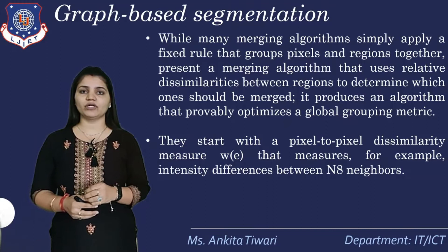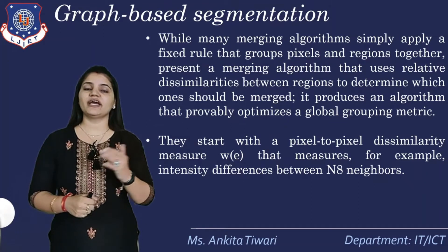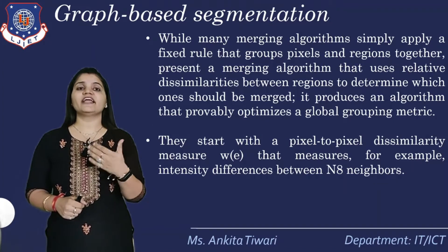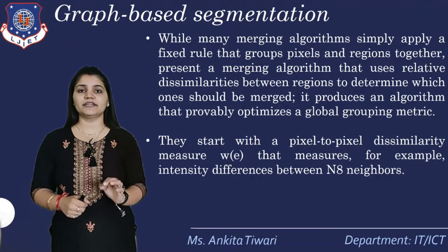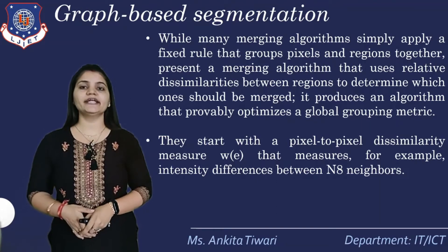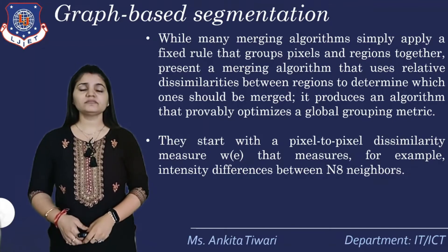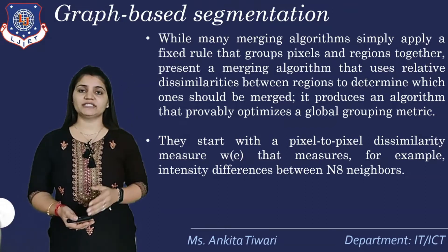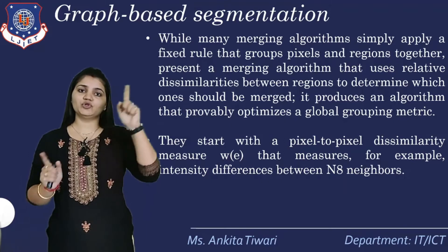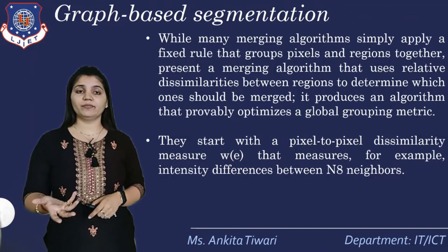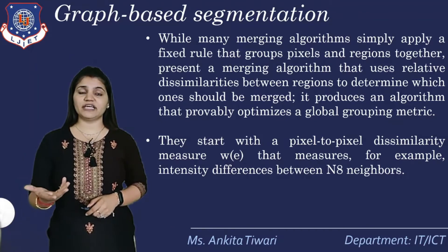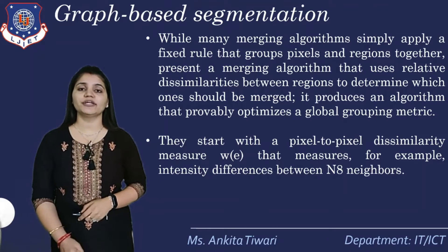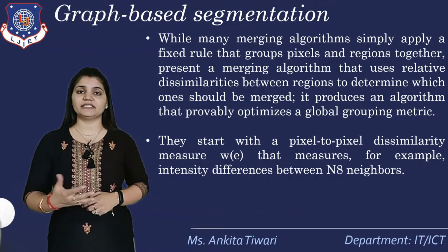We need to find the dissimilarity measure for a particular region. For example, the intensity difference between the N8 neighbors. N8 neighbors is a property where one pixel is defined by eight neighboring properties: left, right, top, bottom, and the two adjacent diagonals — so eight neighboring properties. The first dissimilarity we can find is intensity differences. Whenever we talk about intensity differences, that will be the first dissimilarity between the groups.